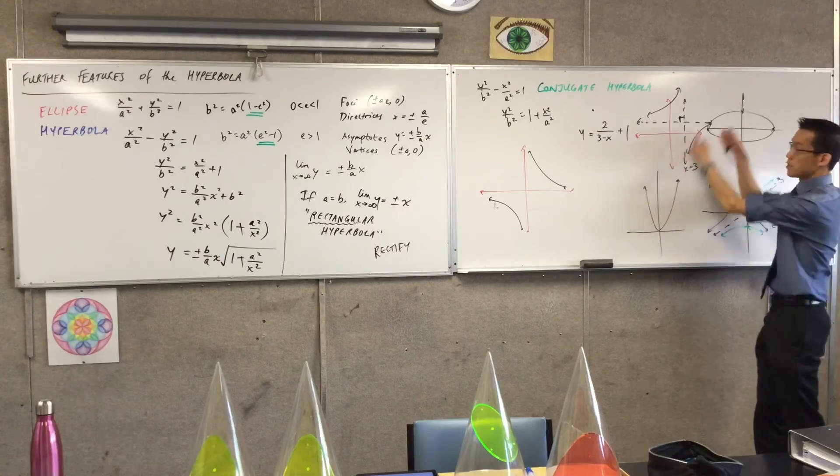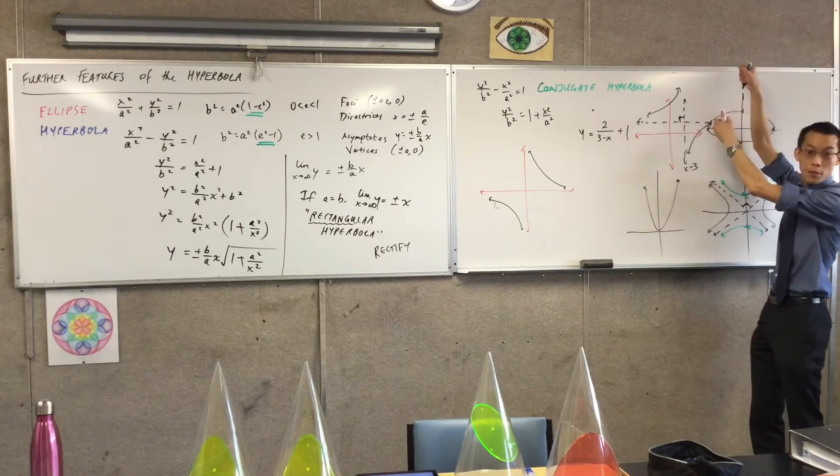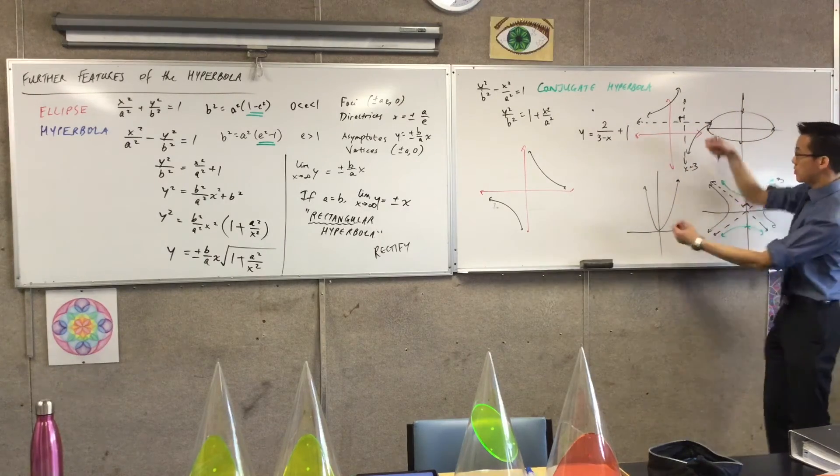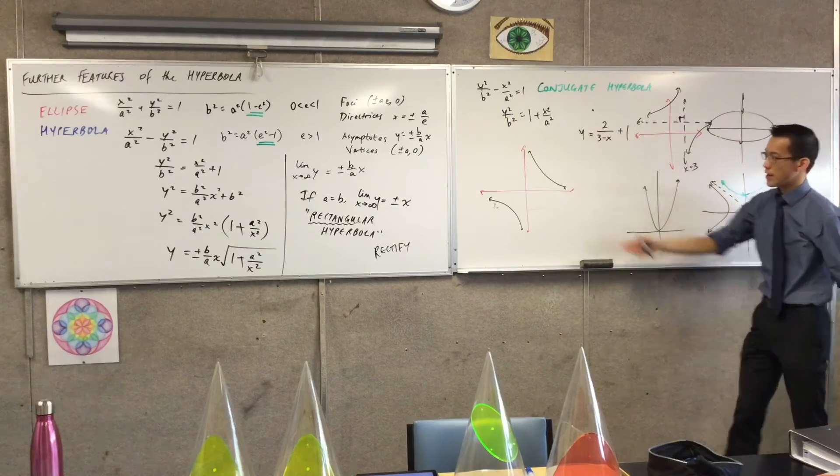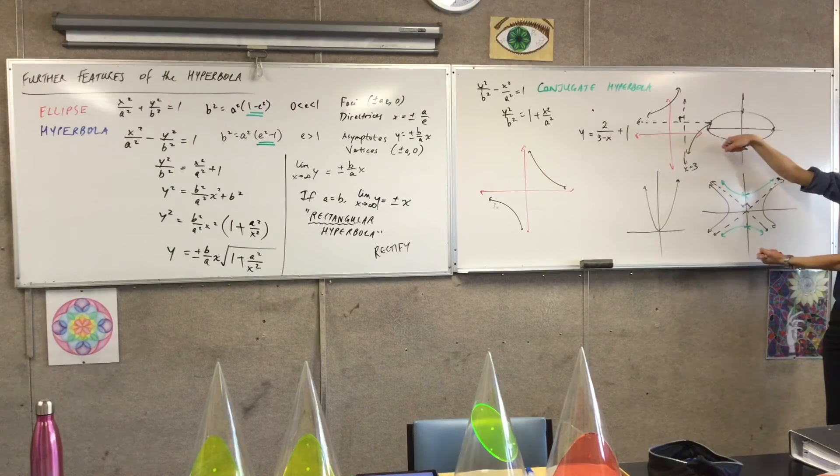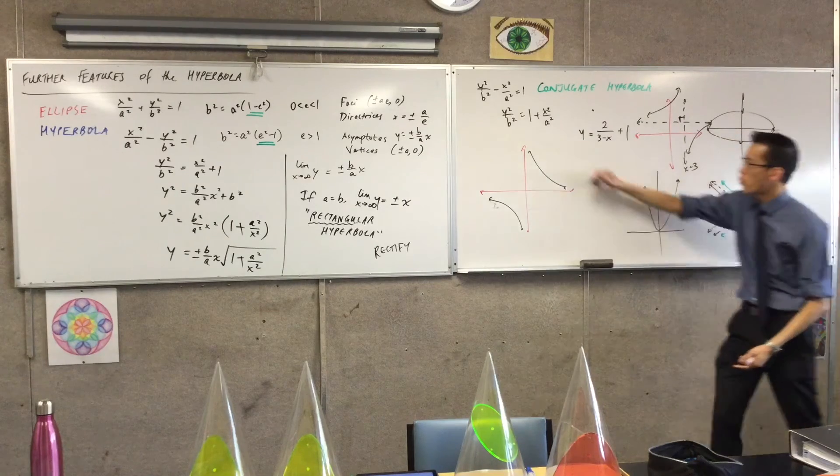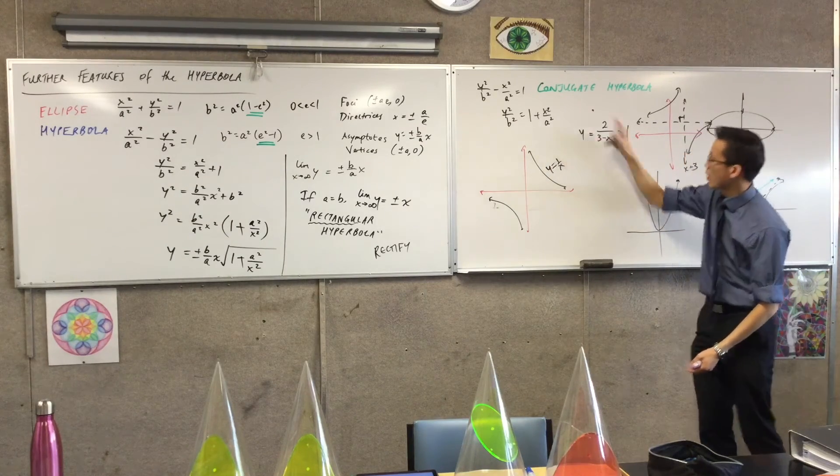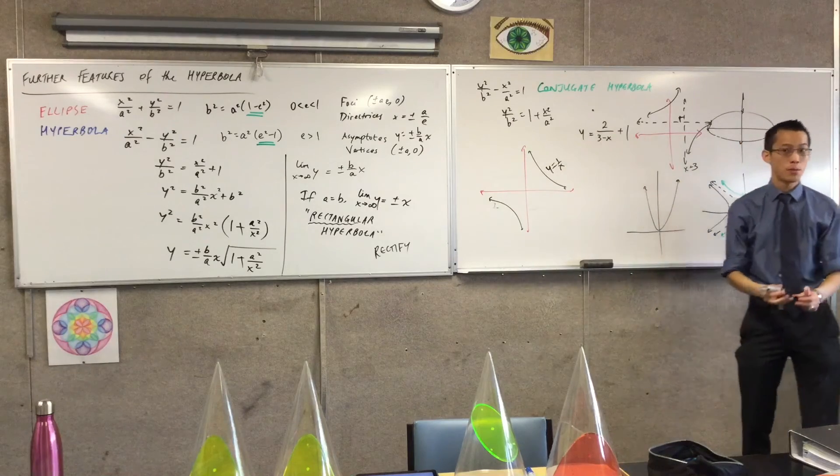It's another rectangular hyperbola. It's just, well, number one, obviously it's been moved away from the origin. Then number two, it's been rotated. In fact, these hyperbolas that we're more familiar with are these guys at 45 degrees. And that's why they have quite different equations than the rectangular hyperbola we've been yet so far.